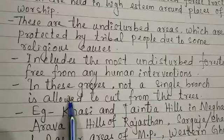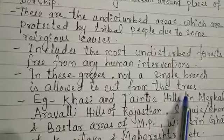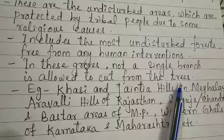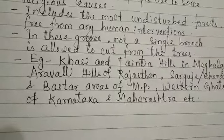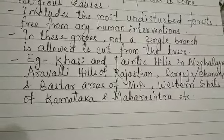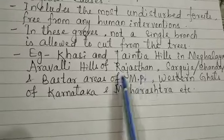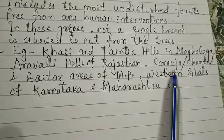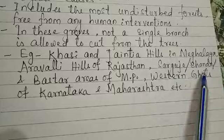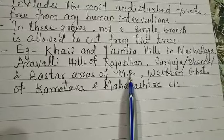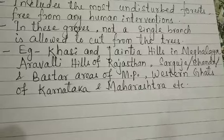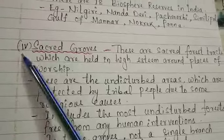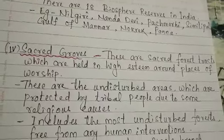Sacred groves include the most undisturbed forests, free from any human intervention. Not a single branch is allowed to be cut from the trees due to the beliefs of the tribals and local people, who never allow any destruction or injury to any plant. Examples include the Khasi and Jaintia Hills of Meghalaya, Aravalli Hills of Rajasthan, Sarguja, Chanda, and Bastar areas of Madhya Pradesh, and the Western Ghats of Karnataka and Maharashtra.